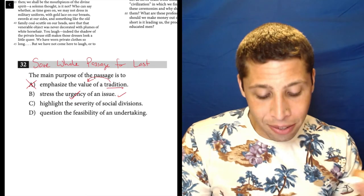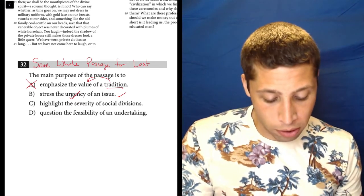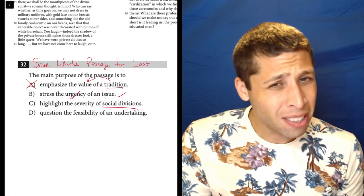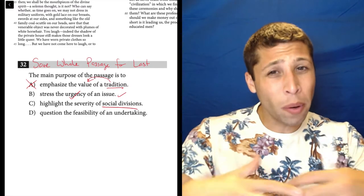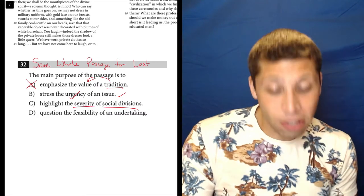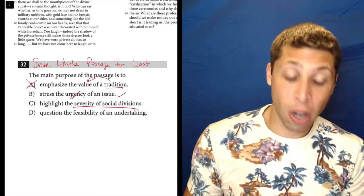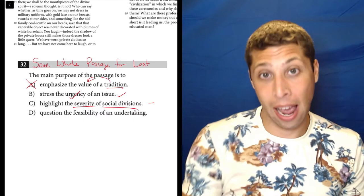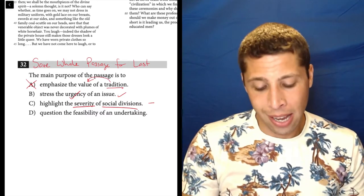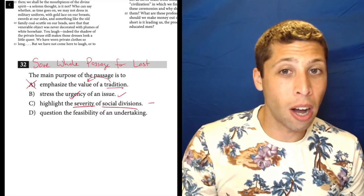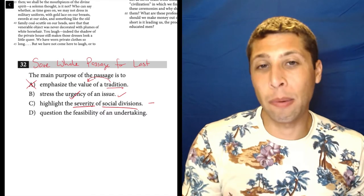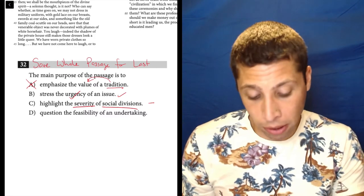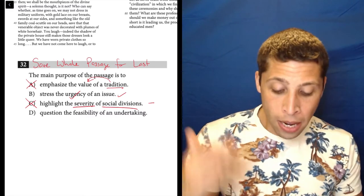But when you get to the main, the big picture question, the same main ideas are going to hold. And so your knowledge from those other questions is helping you. It absolutely tells me the choice B is probably right. But let's look at C. Let's look at D. Highlight the severity of social divisions. Well, again, are they talking about social divisions? It seems to be suggesting that the divisions are going away, right? So if they're talking about how severe they are, it has like the wrong tone.